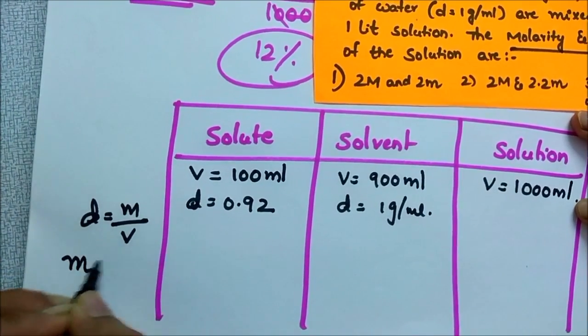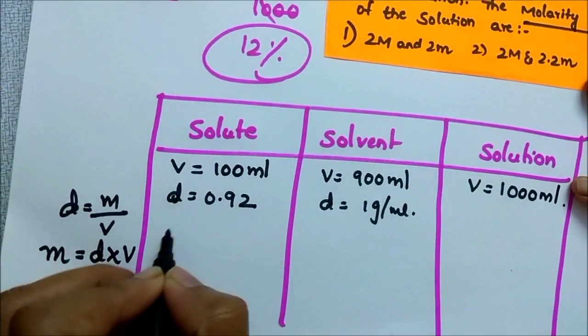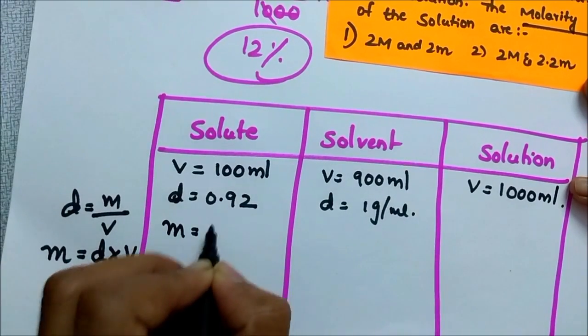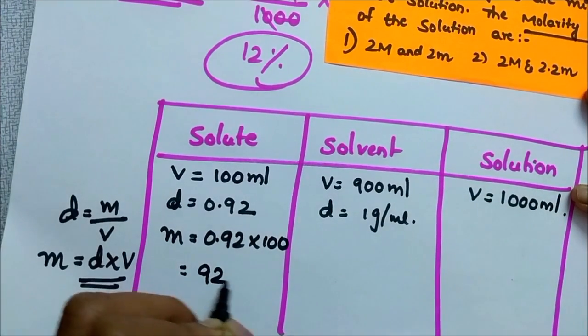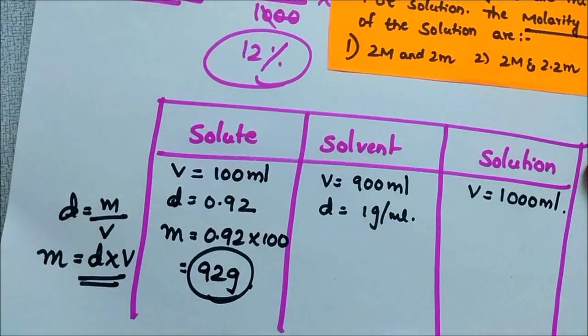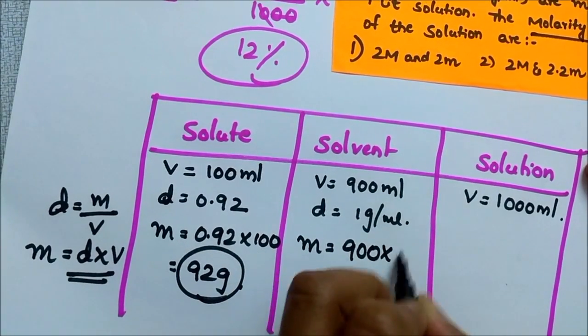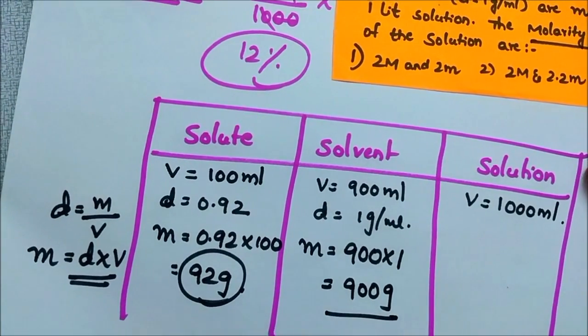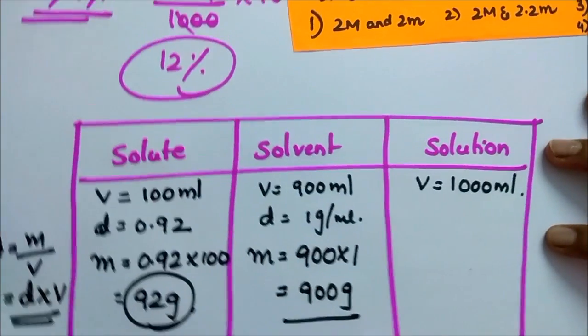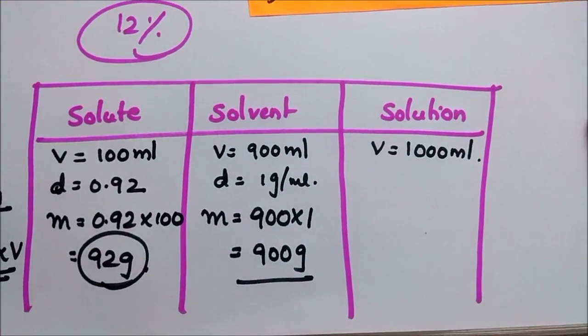Density is equal to mass by volume, then mass of the solute equal to density of solute into volume of solute. So 0.92 into 100 that is 92 gram, we got mass of solute. Mass of solvent is 900 into 1, volume into density, that is 900 gram. We got mass of solvent.